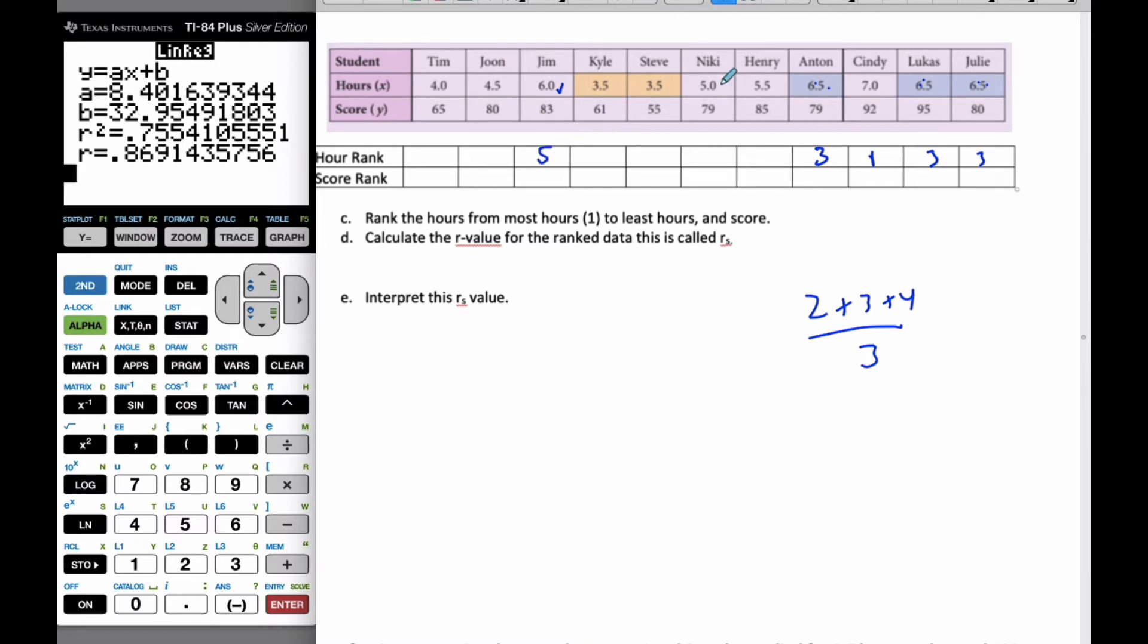Nikki is 6, Henry is 7, June is 8, Tim is 9. And then this is number 10 and 11, so if I average 10 and 11, that gives me 10.5, and they both share the ranking of 10.5.